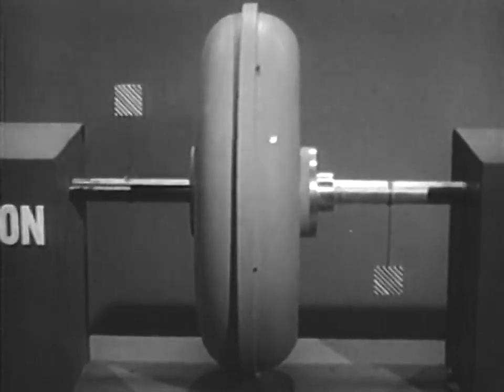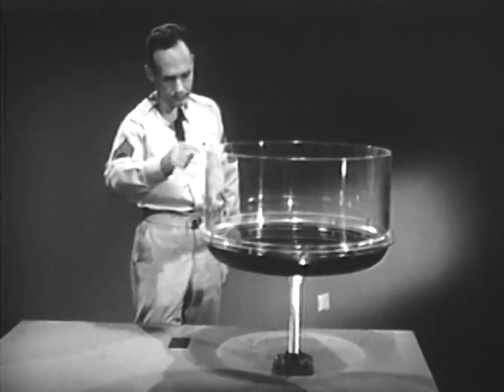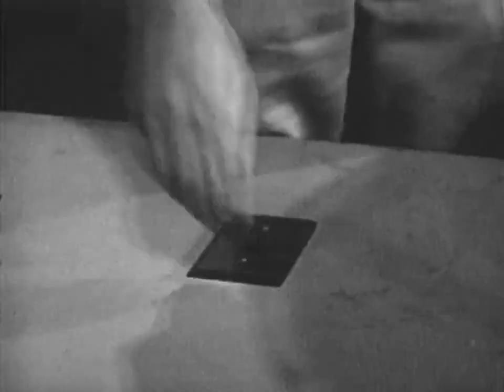To see how the fixed mass of liquid inside can be used to couple the engine to the drive wheels, let's take a look at this bowl filled with a liquid, in this case, oil.